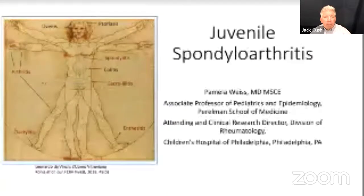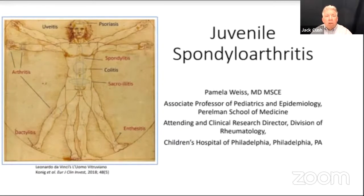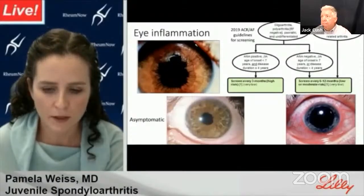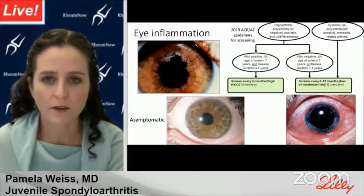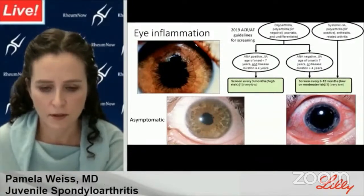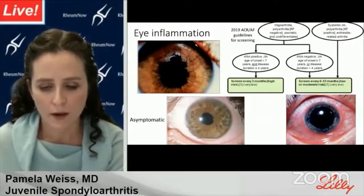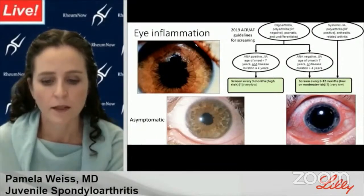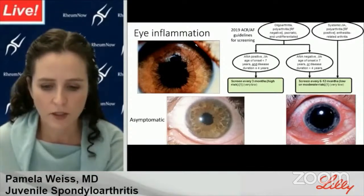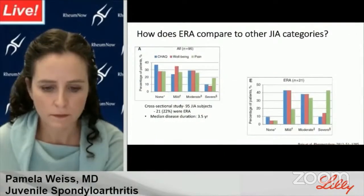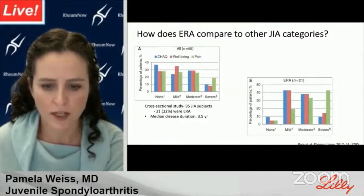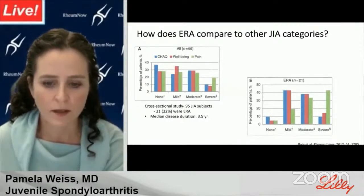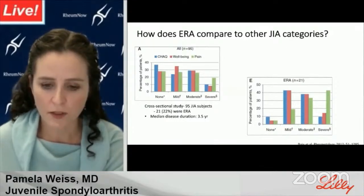Our next presentation is on pediatric spondyloarthritis. Dr. Pamela Weiss, known for her work in this area, comes from CHOP and the Perelman School of Medicine. We asked her to address the issue of juvenile SpA. At the beginning of her lecture she gets into uveitis in pediatrics and adult-onset disease. The screening guidelines shown are from the ACR/AF guidelines, based on JIA category, ANA status, and age of onset. The risk for asymptomatic uveitis in PsA is generally high; in ERA, like adult-onset SpA, eye inflammation is typically symptomatic and screening is recommended only once a year.